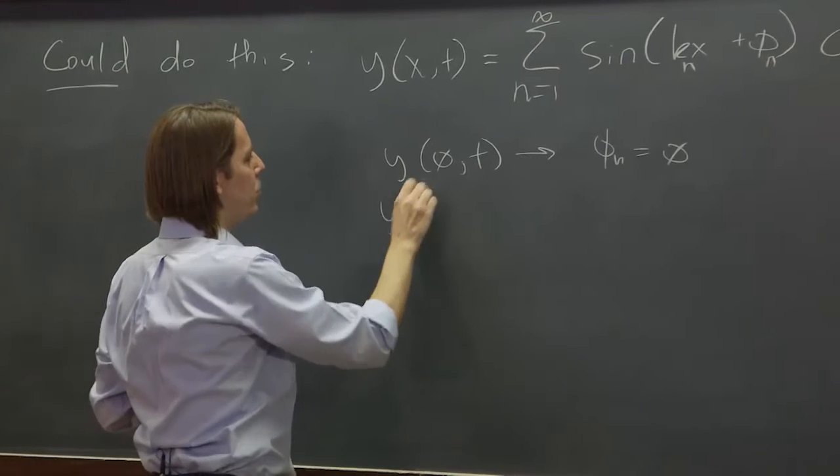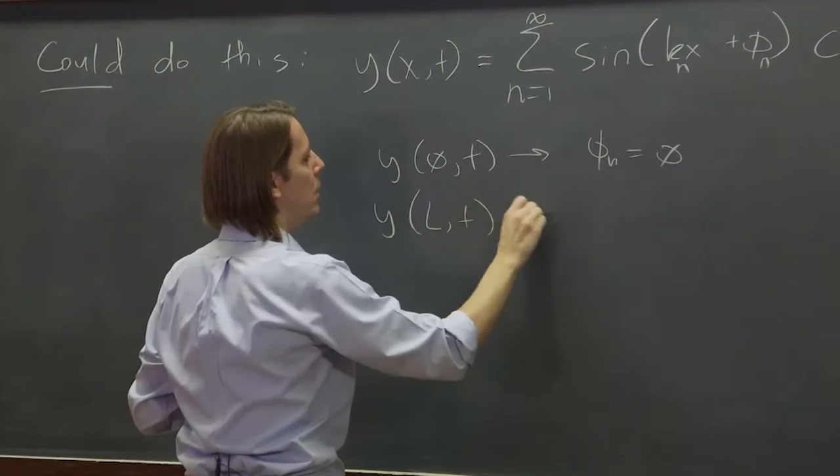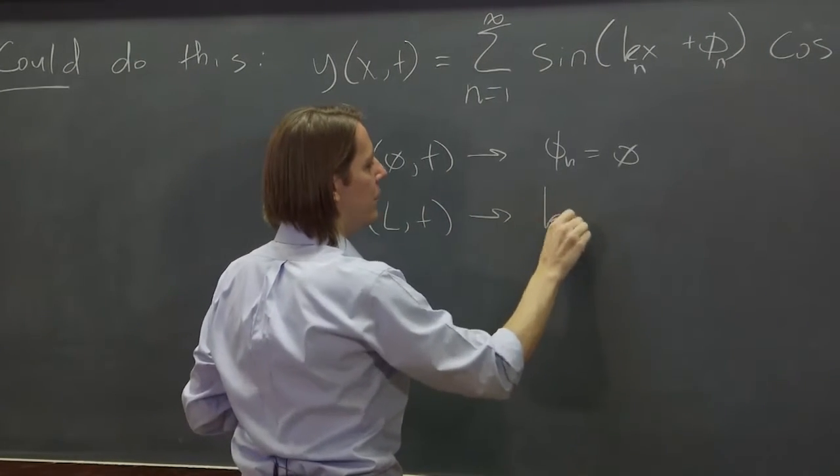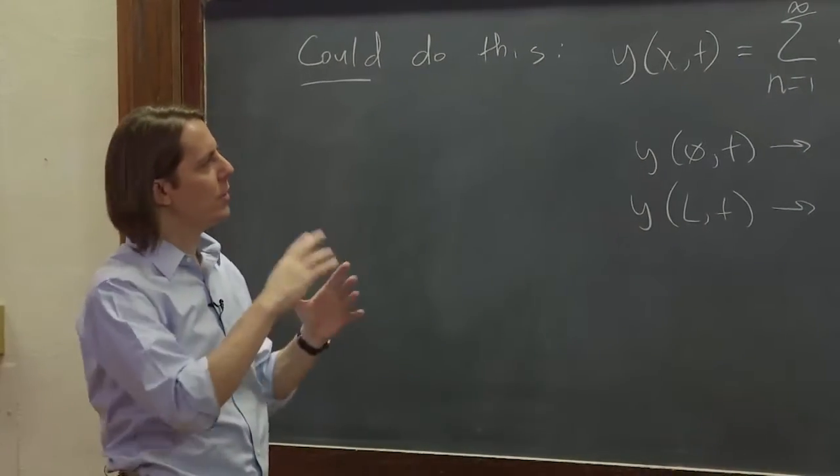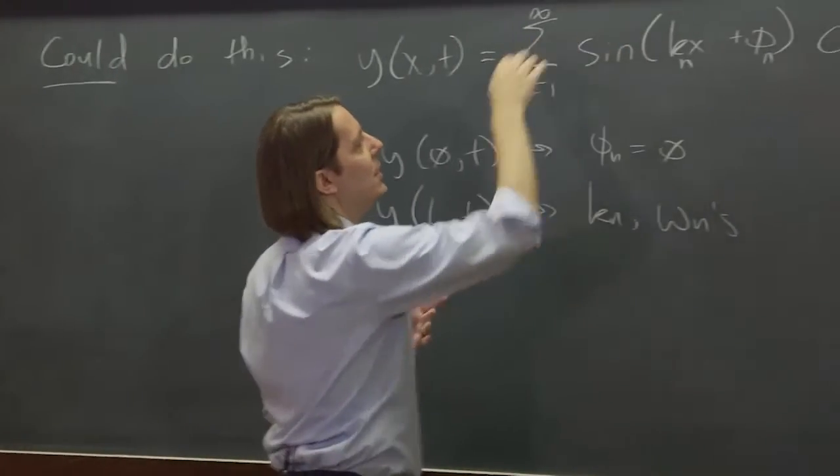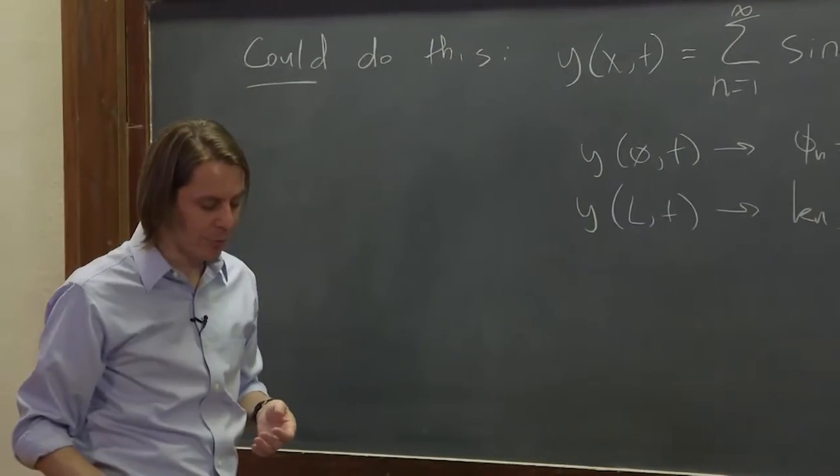And when we clamped it on the right, that's what gave us the discrete frequencies. That tells us that there are discrete normal modes, and that's what we end up using in the sum. We end up summing up those normal modes.